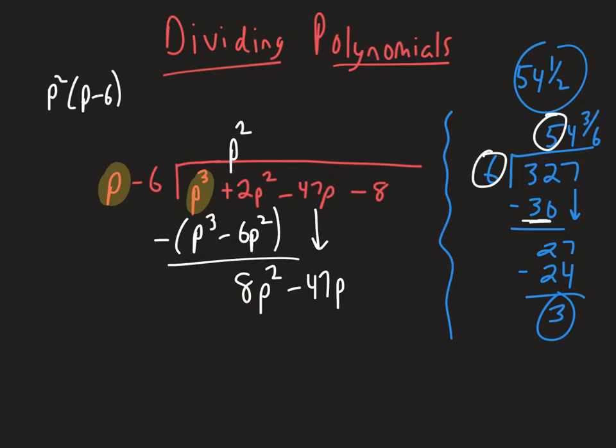Now what I'm going to do is see how many times does this same p here go into 8p squared. So p into 8p squared should go 8p times. It's positive 8p times. So I'm now going to multiply the 8p times the p minus 6 out here, and I'll get 8p squared minus 48p. And again, we're going to subtract this down. We have 8p squared minus 8p squared is 0. So negative 47p take away negative 48p. Since we're subtracting a negative again, it's going to be like adding, so it's just going to be 1p. And then there's a minus 8 still.